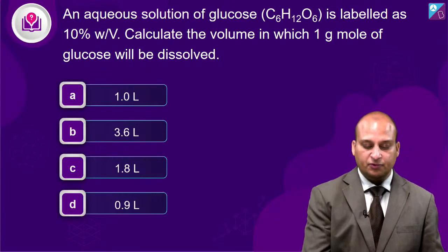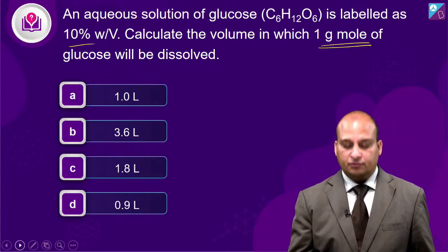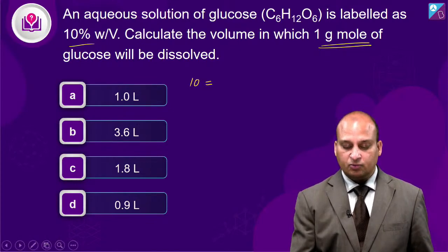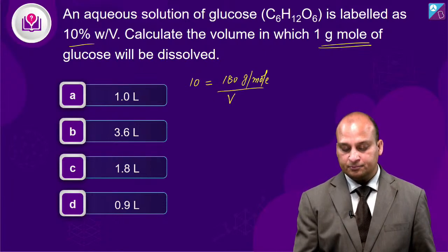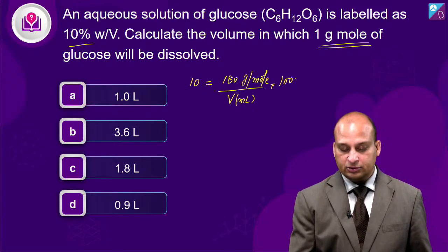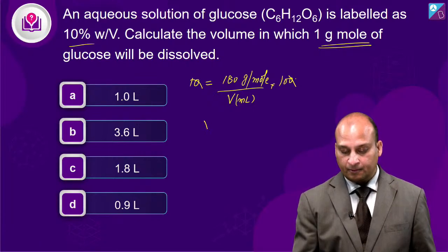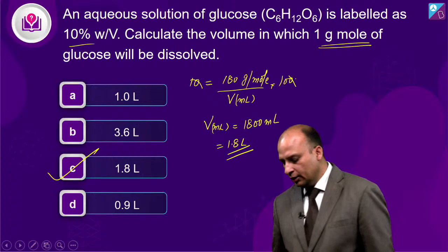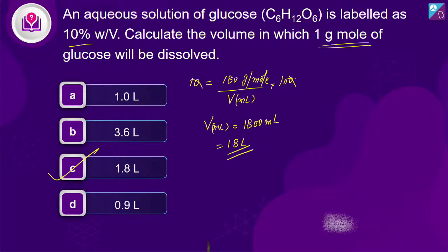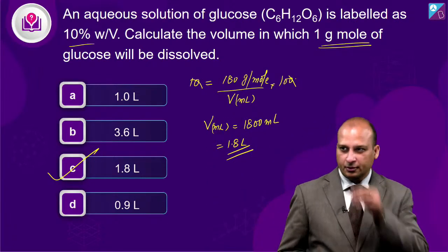Question: An aqueous solution of glucose is labelled as 10 percent weight by volume. Calculate the volume in which 1 gram mole of glucose is present. Weight by volume is 10, weight is 1 gram mole which is 180 gram per mole. Solving: 180 divided by 10 multiplied by 100 gives 1800 mL or 1.8 litres. The answer is C.